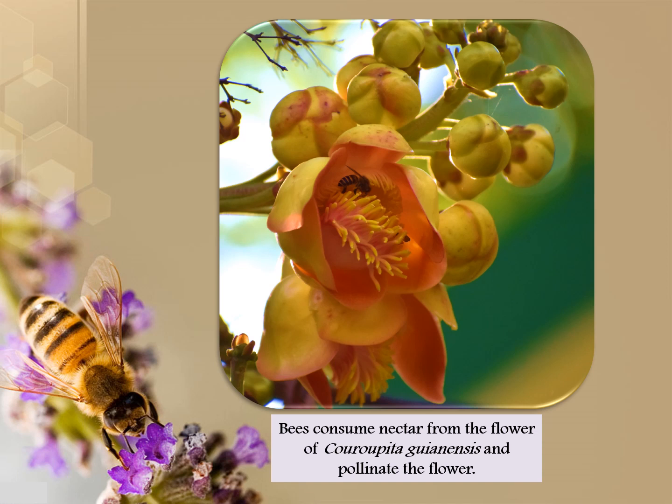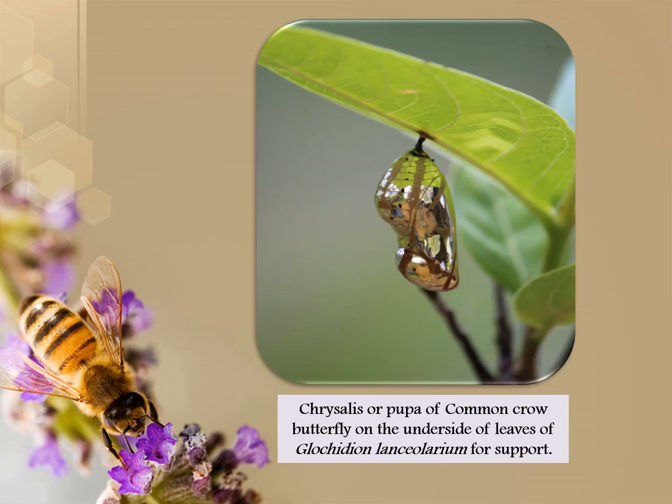Bees consume nectar from the flowers of Choreopita guanensis, also known as Nag Champa, and pollinate the flowers. The chrysalis or pupa of the common crow butterfly attaches to the underside of leaves of Glycosmis lanceolaria for support.